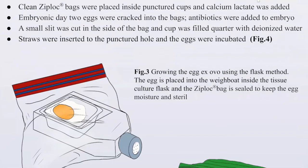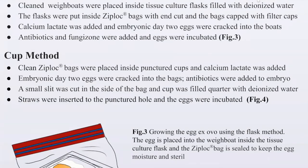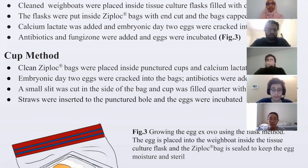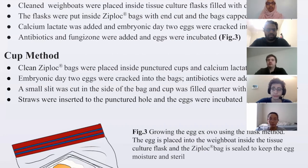This is an illustration of the flask method. Our second method is the cup method. As with the flask method, everything is cleaned with ethanol and chlorhexidine and dried with gauze to maintain an antiseptic environment. A clean ziplock bag was placed inside a puncture cup, and 0.3 grams of calcium lactate and 3 milliliters of milliQ water were added. An embryonic day-2 egg was cracked into the bag, and 0.6 milliliters of antibiotics and 0.06 milliliters of fungizone were added. Then we cut a small slit on the side of the bag near the edge, fill the cup with deionized water halfway up to the puncture hole, insert a straw into that puncture hole, and place the egg in the incubator for further observation.